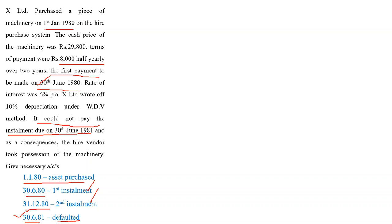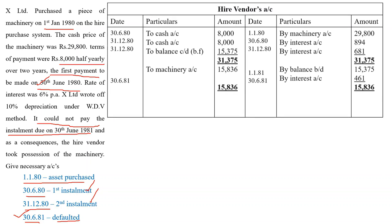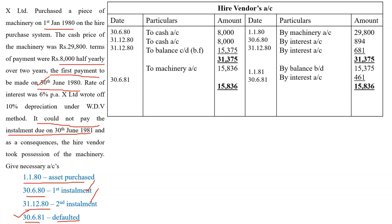With this information, we will prepare ledger accounts. In the books of the higher purchaser, that is X Limited, we are preparing the hire vendor account. As explained in a previous video, in the first year we have entries for buying the asset, down payment, interest due, and installment payment. Since there is no down payment in this problem, we skip that transaction. Let's see how to record the remaining entries.